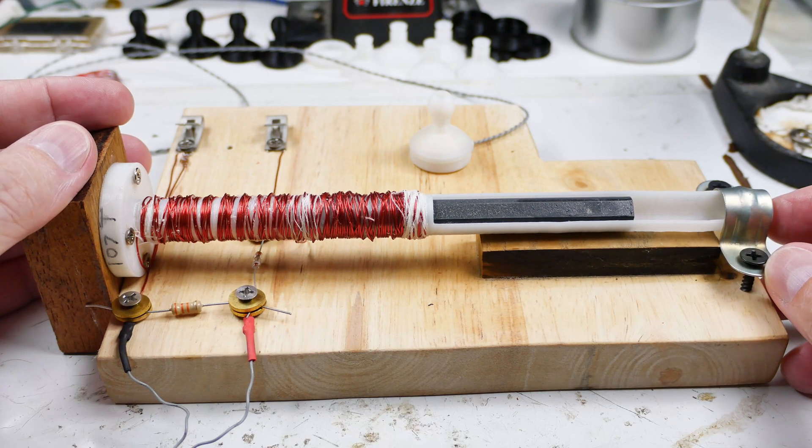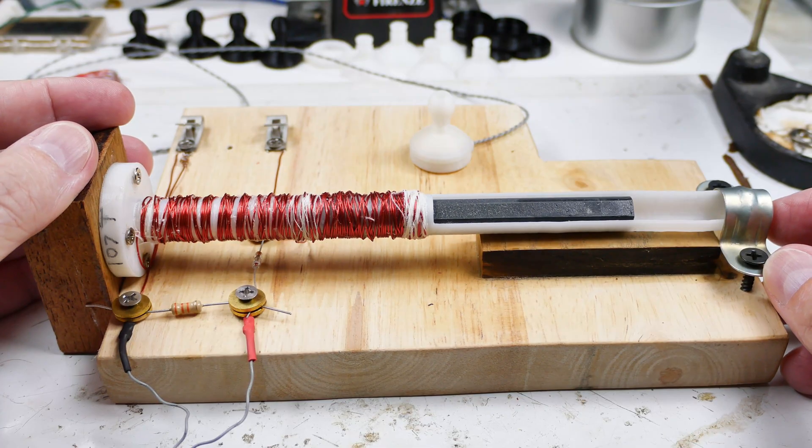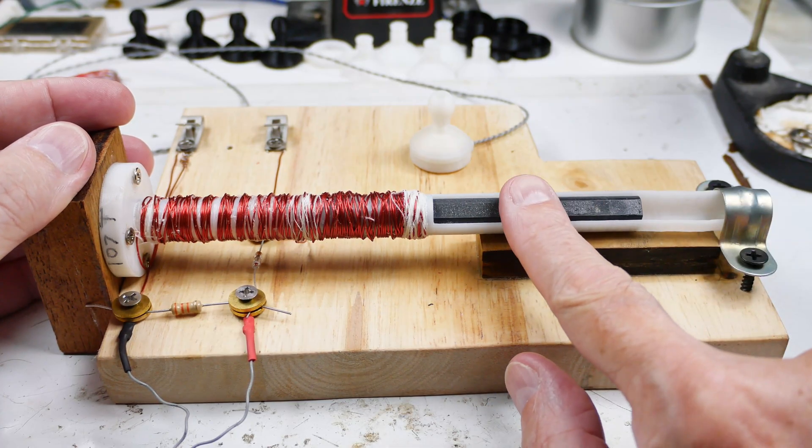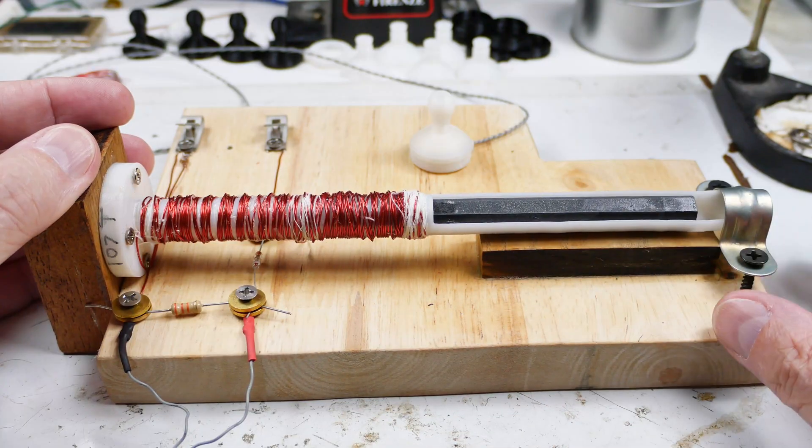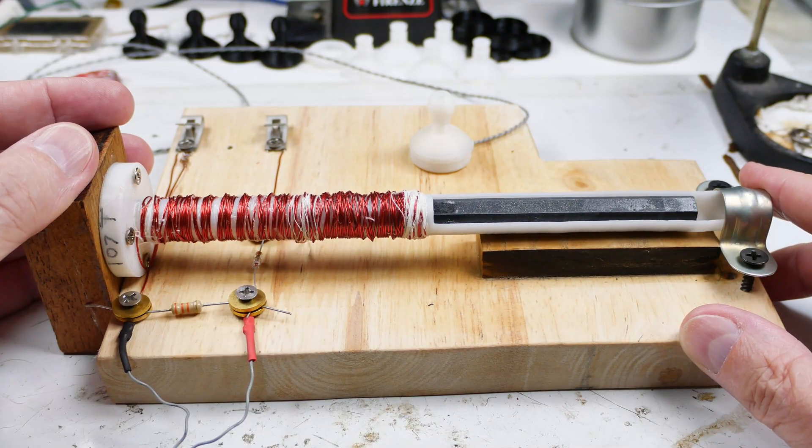This is something rather rare in the crystal radio world. It's an inductively tuned crystal radio and the tuning is done by sliding this ferrite bar in and out. So let's go see how you can build one for yourself.